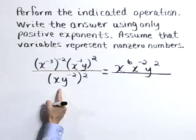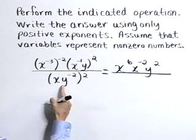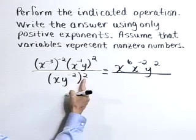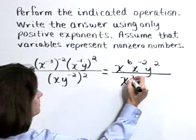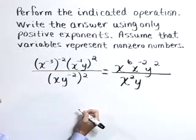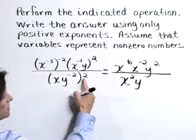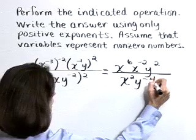Now for the denominator. Raising each of these factor pieces to the second power gives x squared times y to the negative 2 times 2 is the negative 4 power.